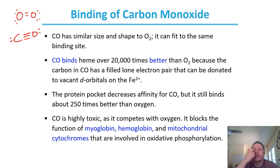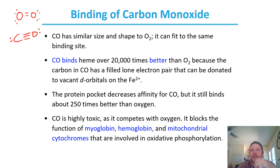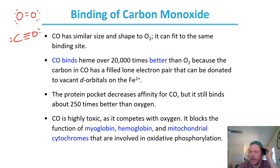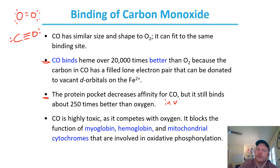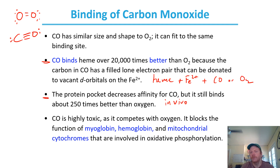Because CO is similar in shape and size to O2, carbon monoxide is able to fit in the same binding site as O2. Carbon monoxide binds to heme 20,000 times better than O2 because the carbon in CO has a filled lone electron pair that can be donated to vacant d-orbital electrons on an Fe2+ ion. The protein pocket decreases affinity for carbon monoxide, but it still binds about 250 times better than oxygen — the 20,000x figure applies to free heme, while the 250x figure applies in vivo with the protein present.